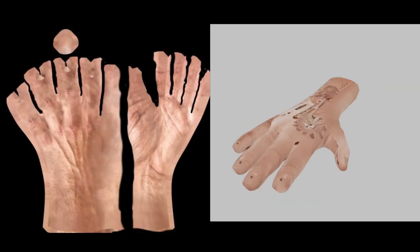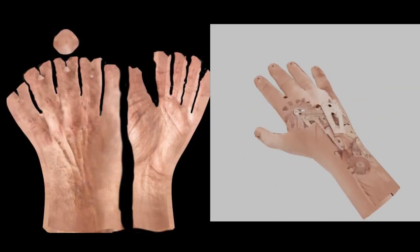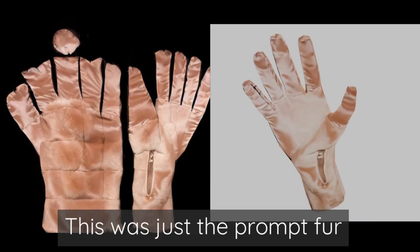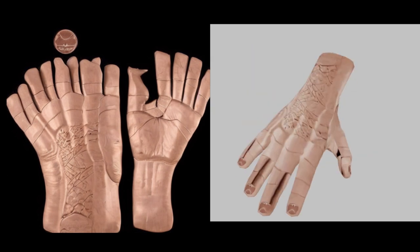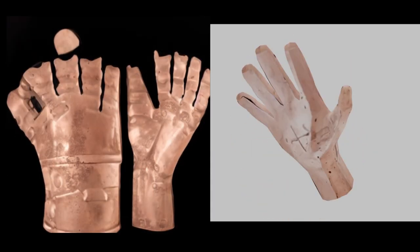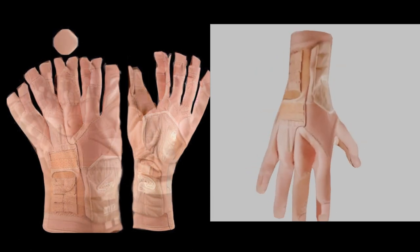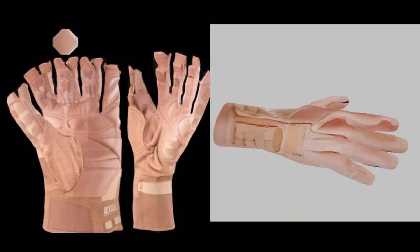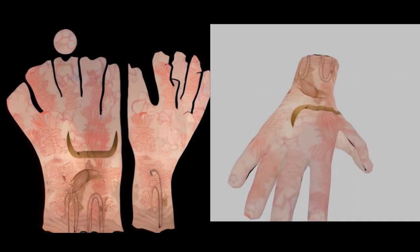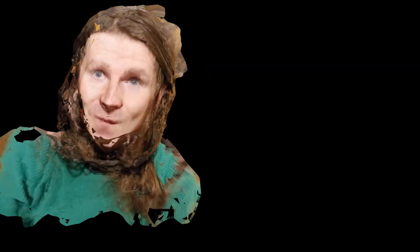Something really neat is that the structure of the picture can actually act as a second prompt. If the picture is structured like a hand, you could just put in a prompt like 'leather' or 'fur' and it'll give you a fur glove or a leather glove. It's not just the prompt that matters, it's not just the colors — it's also the shapes of the images that matter. There are a lot of layers to this.